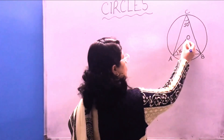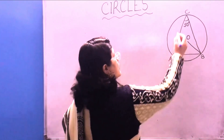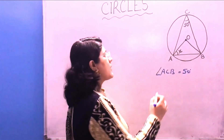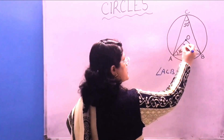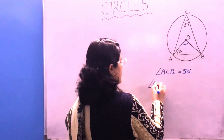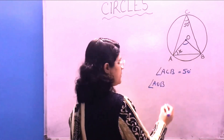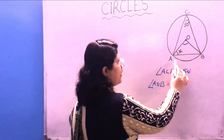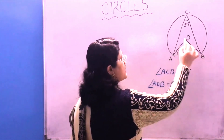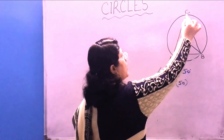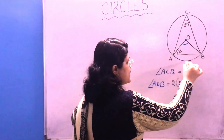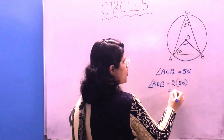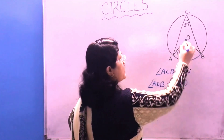Let us solve a few questions using these theorems. First question: O is the centre of the circle and angle ACD is given as 50 degrees. We need to find angle AOB. Using our theorem — the angle subtended by arc AB at the center is double the angle subtended at the circumference — since the angle at the circumference is 50 degrees, the angle at the center should be twice that, which is 100 degrees. So angle AOB is 100 degrees.